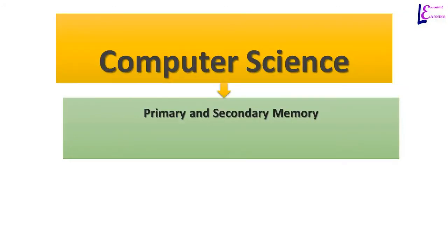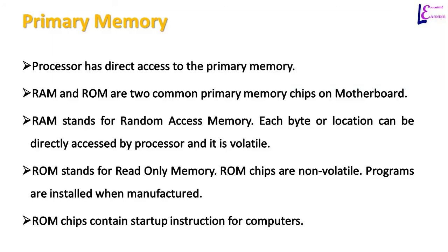In this video we will discuss primary and secondary memory. Primary memory stores instructions that the computer is currently working with. That is why the processor has direct access to primary memory. There are two types of primary memory; one type is called RAM.